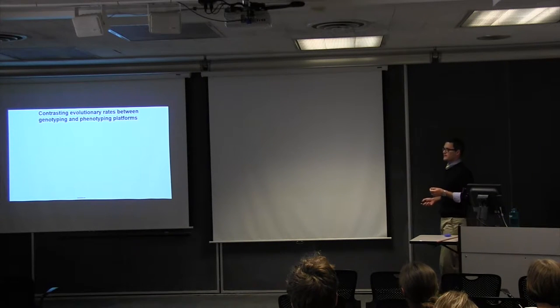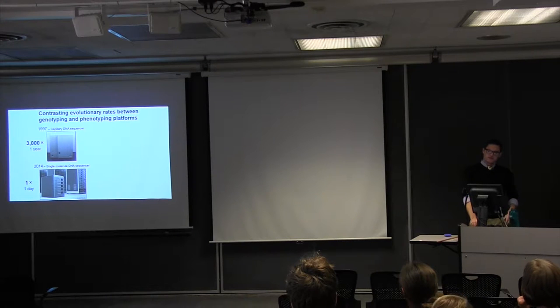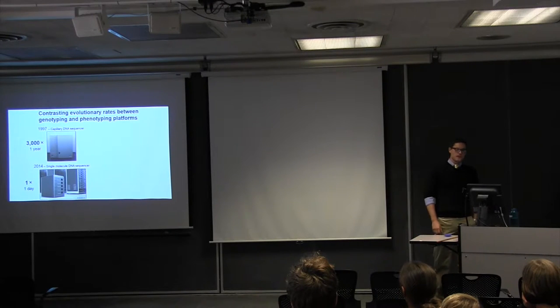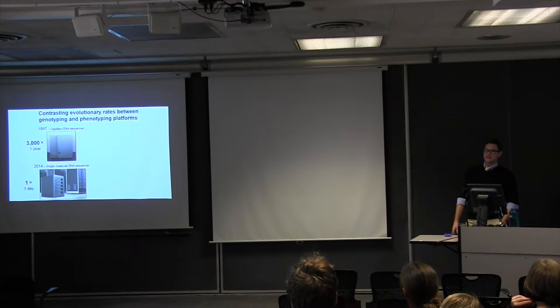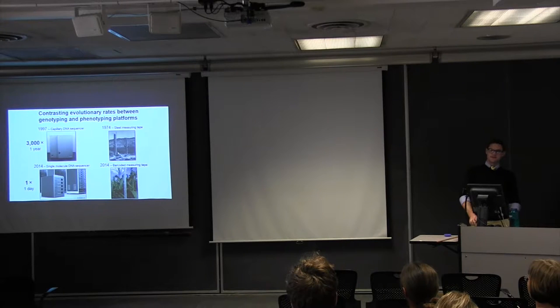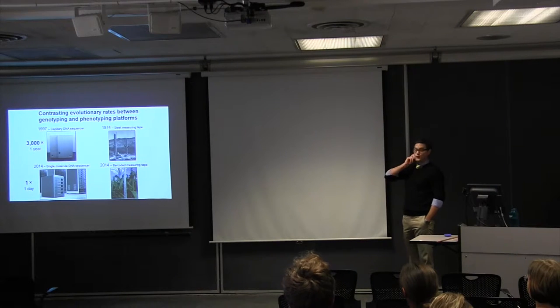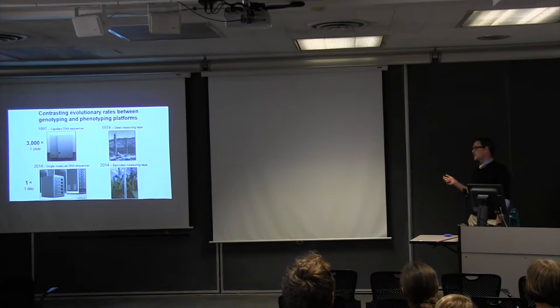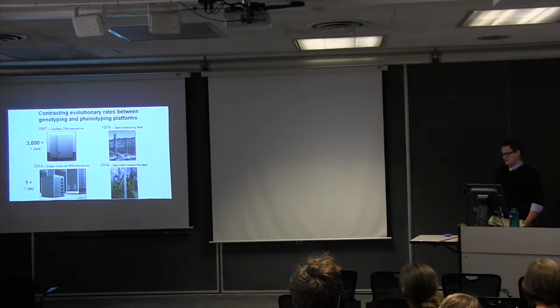And so in the last 20 years, the bulk of the plant community's effort has been on developing genotyping sequencing technology. And so on the left, you see this top image is a ABI-377. 3,000 of these were running in tandem for over a year to sequence the human genome. That was in 1997. 17 years later, we have one machine, one day, one genome. So that gives you an idea of how fast technology improved. Unfortunately, for plant phenotyping, we have not seen that. In 1974, this gentleman is measuring a cactus with a steel tape measure. 40 years later, almost a double, the only thing that's improved is we use a bar-coded measuring tape. And this kind of highlights the problems of field phenotyping and why this new development is needed in terms of technology to address these issues.